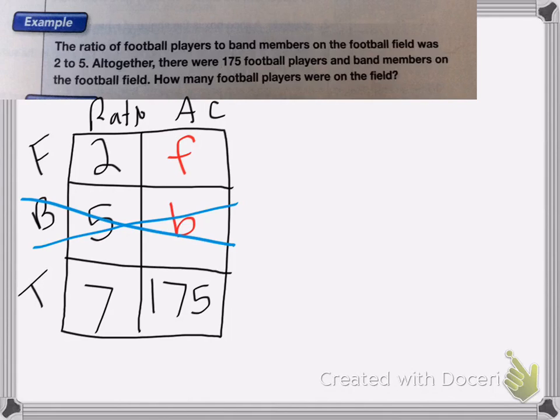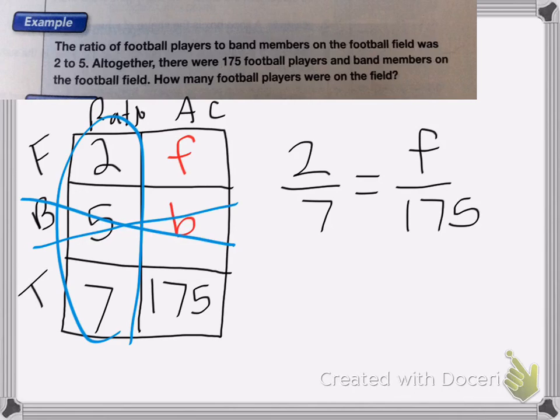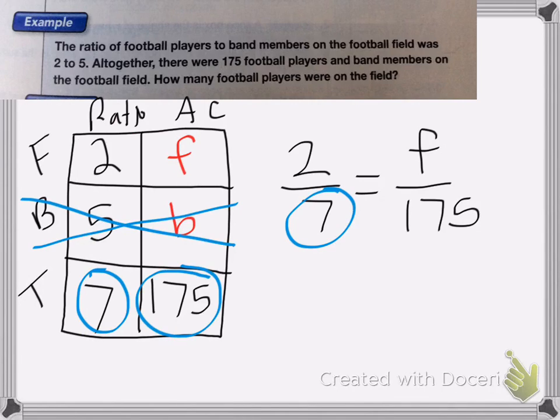Now, just like always, we're going to turn this into a proportion. So we're going to do 2 sevenths equals my football players over 175. So you always do this column and this column. And since I don't need the band members, I don't need to use 5. I'm going to use 7 as my total because it gives me the 175.